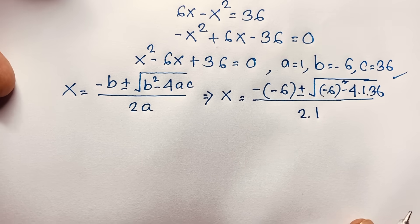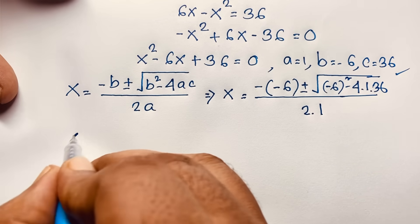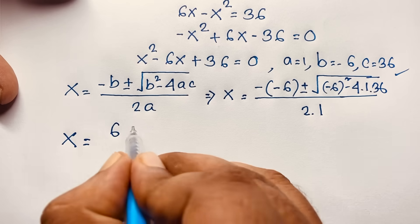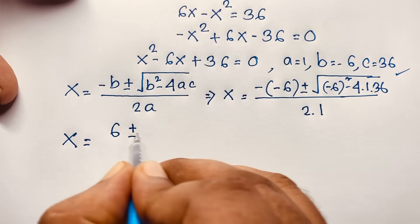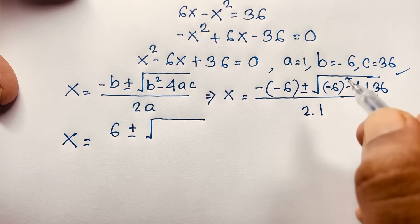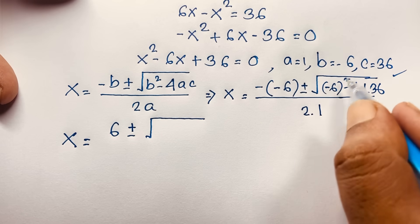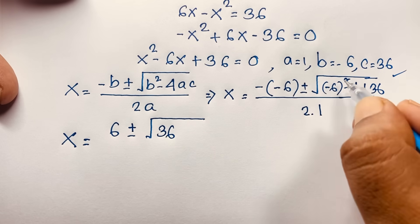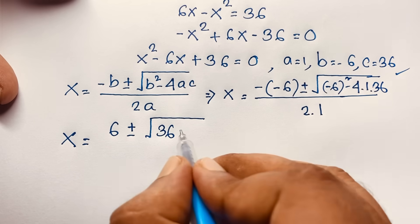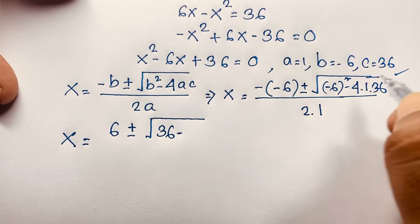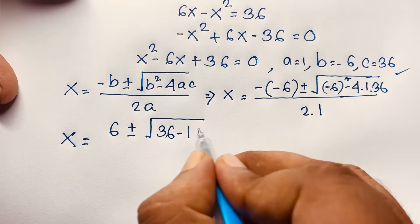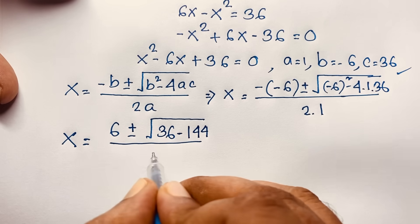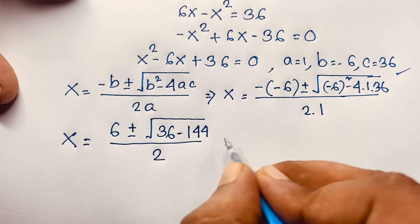Then x is equal to positive 6 plus or minus square root of negative 6 whole squared minus 4 times 1 times 36, over 2 times 1. Negative 6 whole squared is 36 — power is even so it is always positive — minus 4 times 36 which is 144, all over 2.